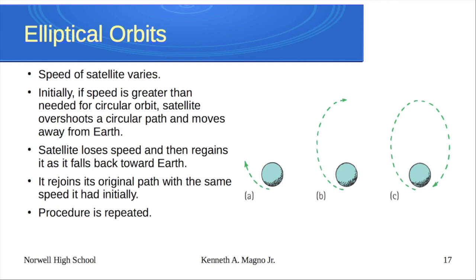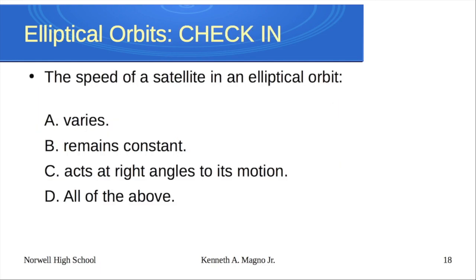Many orbits aren't as exaggerated — they just have a slight wobble. But some could have very exaggerated orbits, coming in very close and going far away. The speed of a satellite in an elliptical orbit will vary.